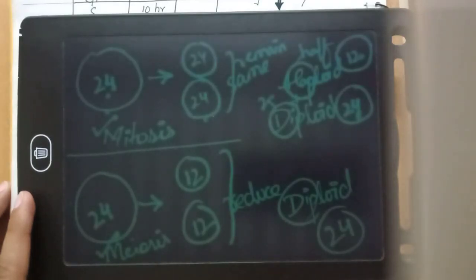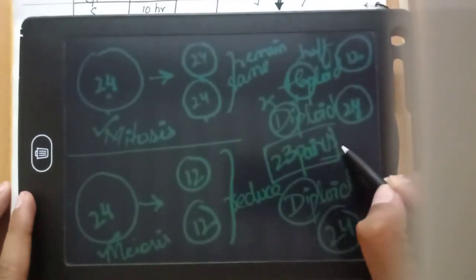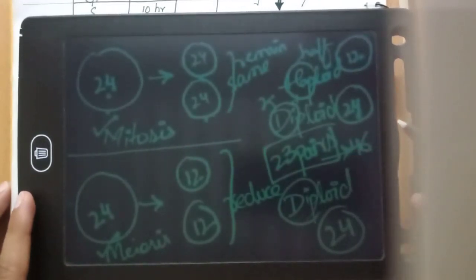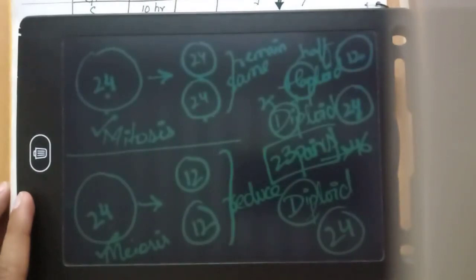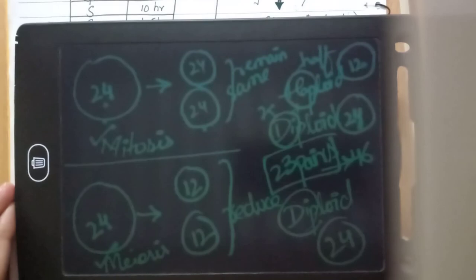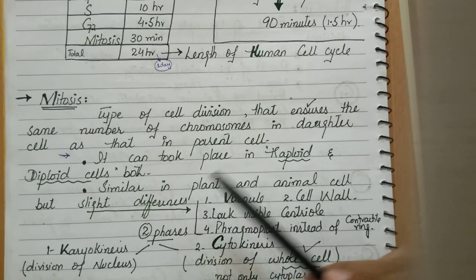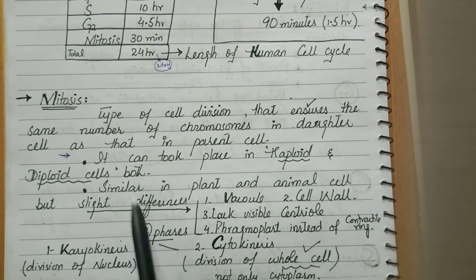In a diploid cell, chromosomes are present in 23 pairs — 23 pairs is 46 chromosomes, or 46 chromosomes means 23 pairs. A diploid cell will undergo meiosis because meiosis can take place in both diploid and haploid cells in any animal, plant, or organism.